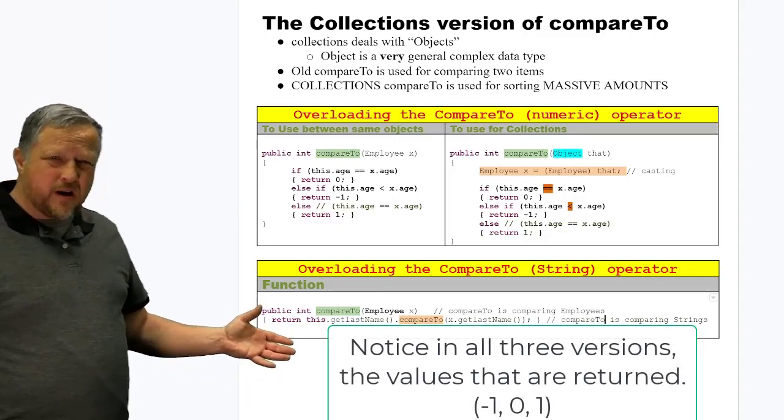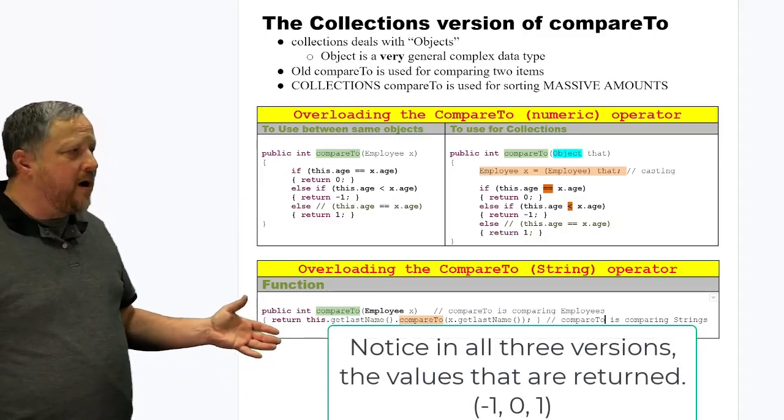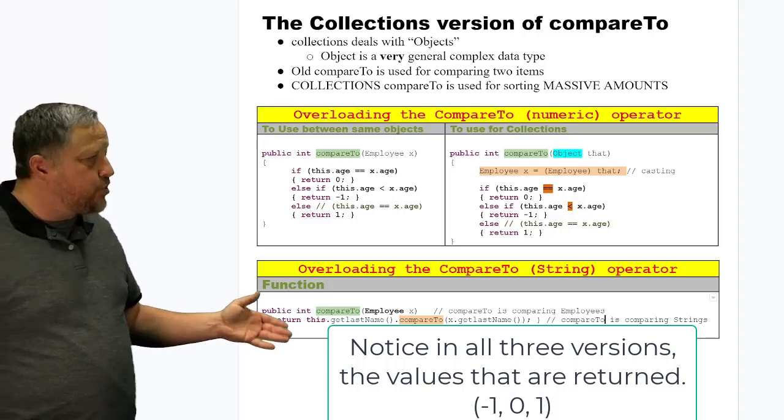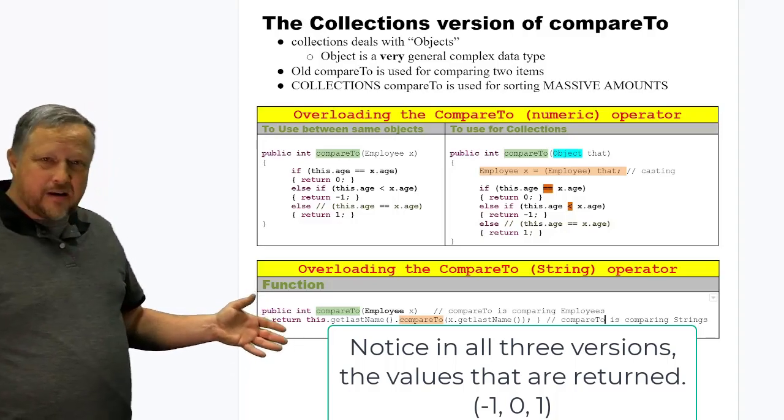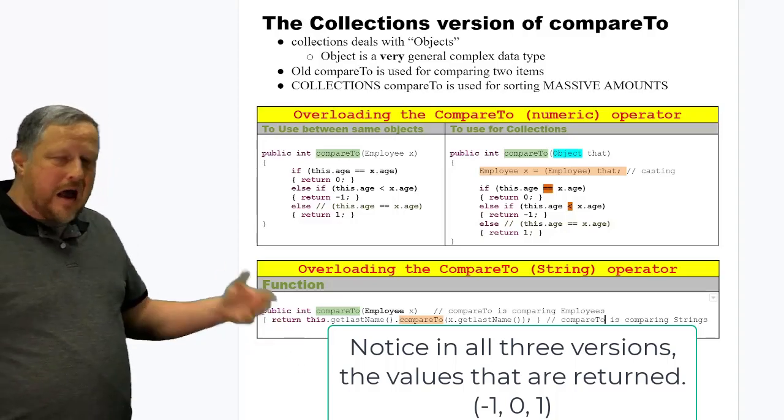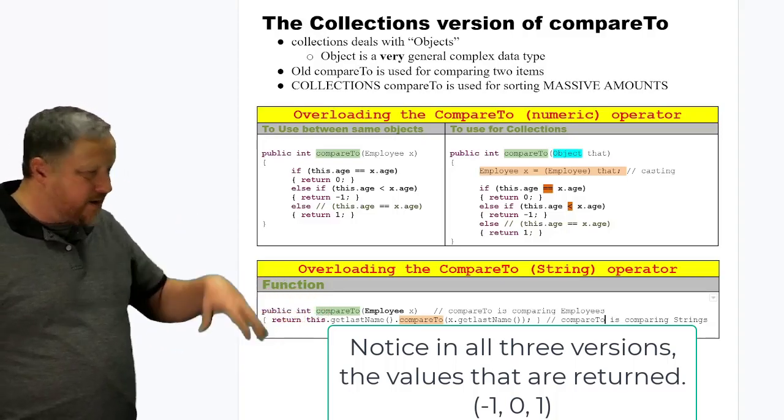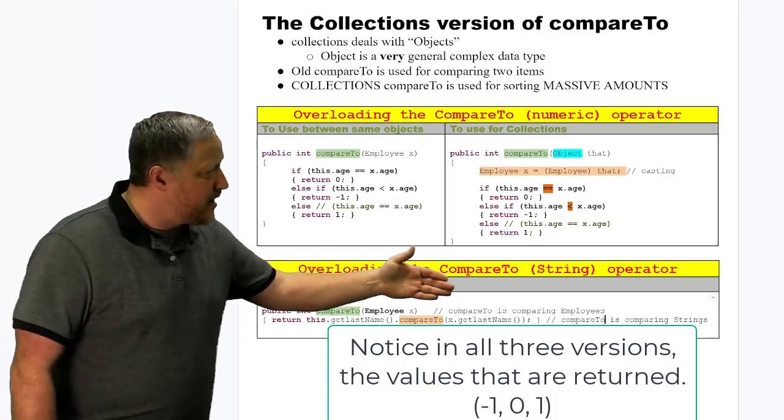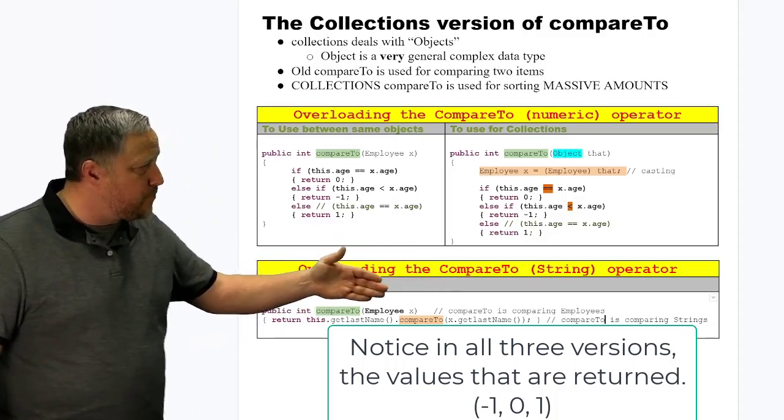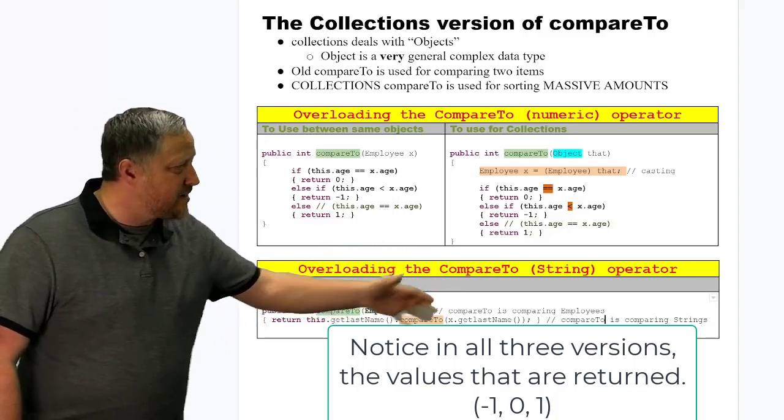So in this one, even though it's very limited here, this one's just comparing the last names of two objects in this particular object of employee. It's going to look at this, meaning this particular object, and then the other one that's being passed in here by employee X. That's why we have an X dot get last name.